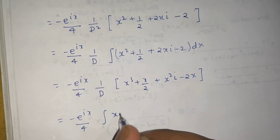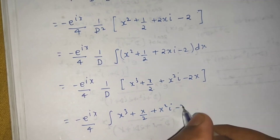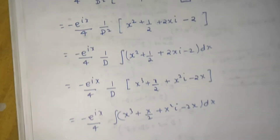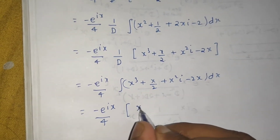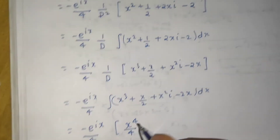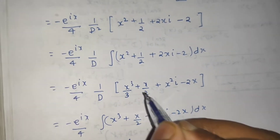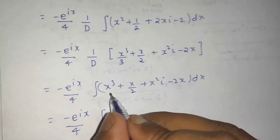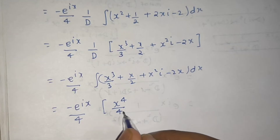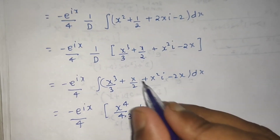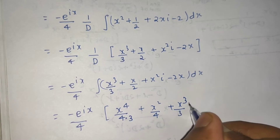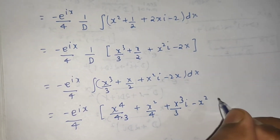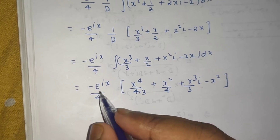So after the double integration we get -e^(ix)/4 · (x⁴/12 + x²/4 + x³i/3 - x²). Now replacing e^(ix) = cos x + i·sin x, we write this as -(cos x + i·sin x)/4 · (x⁴/12 + x²/4 - x² + x³i/3).